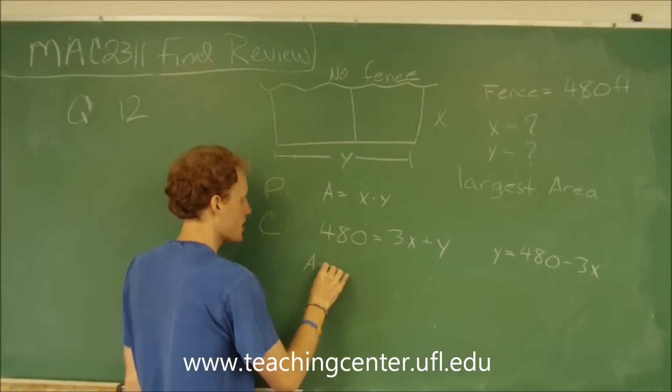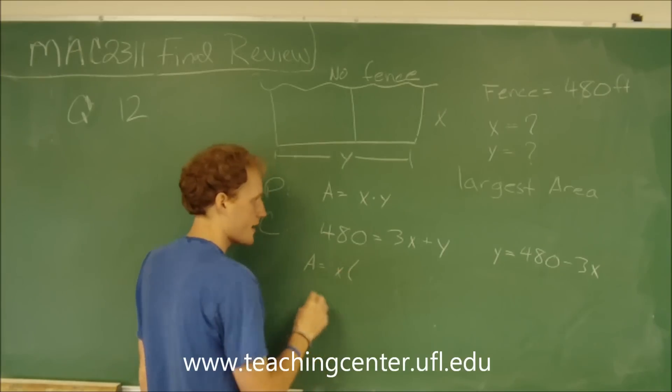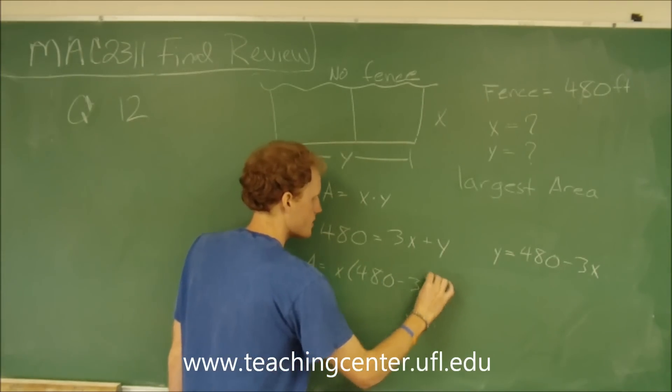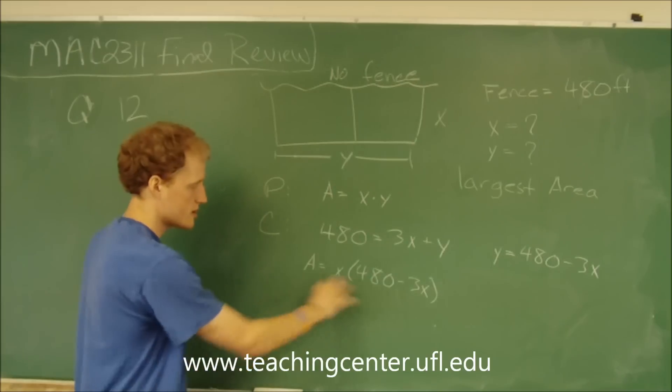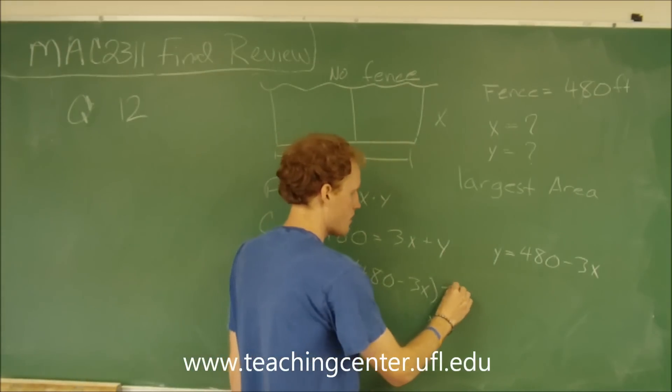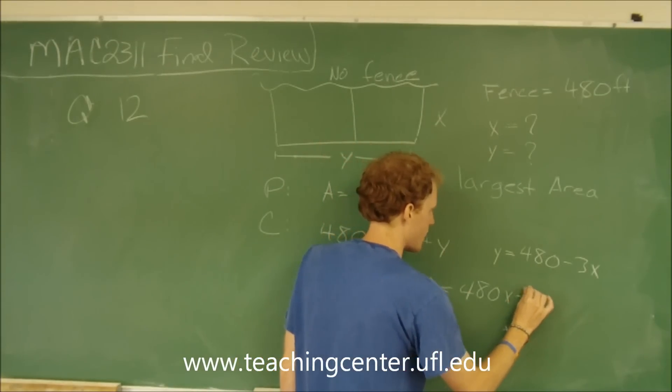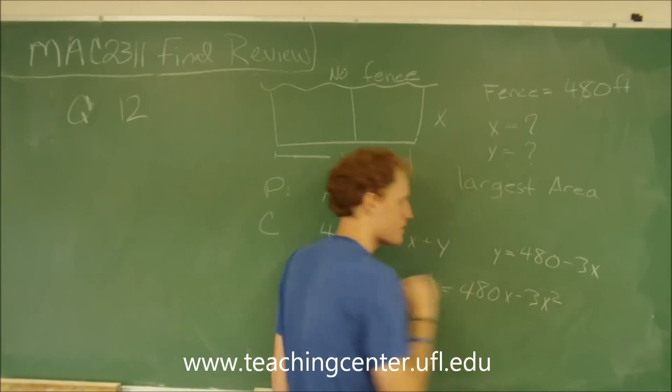So let's plug this equation into the primary and we're going to get the area equals x times 480 minus 3x. So simplify this equation and we get 480x minus 3x squared.